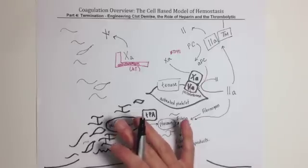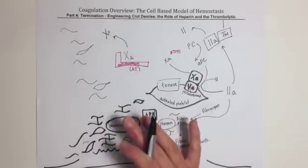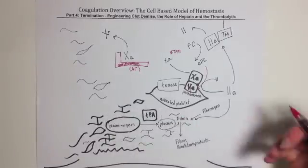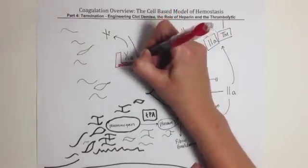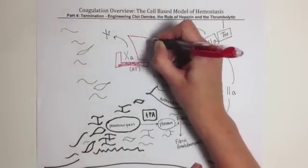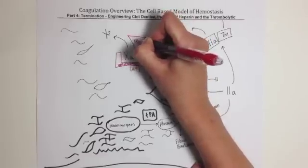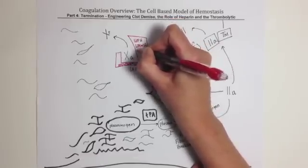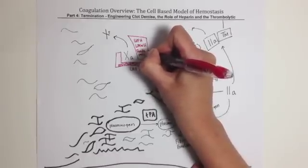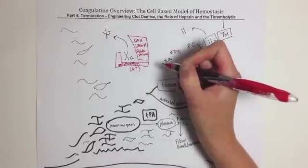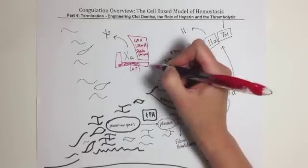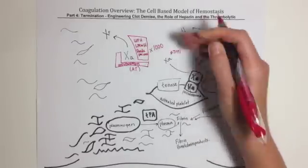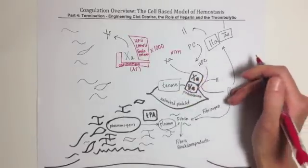Most often when a patient arrives in our emergency room with chest pain, we look to slow the formation of this clot by administration of agents that potentiate the action of antithrombin. These agents are known as unfractionated heparin, low molecular weight heparin, and also fondaparinux. These agents essentially potentiate the inactivation of factor X by a thousand fold, thus affecting the efficacy of the production of thrombin.